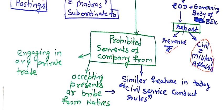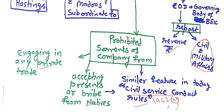The fourth important feature is that it prohibited servants of the company from engaging in private trade and accepting presents or bribes from the natives. A similar provision is also followed today by IAS officers under the Civil Service Conduct Rules: when an IAS officer receives a gift in any meeting, they must report it to higher authorities, and if asked, submit it to the treasury; otherwise they may keep it. This is written under Civil Service Conduct Rules of around 1962 to 1965.